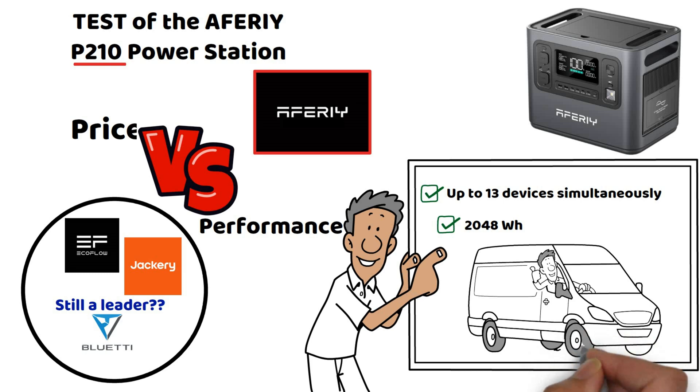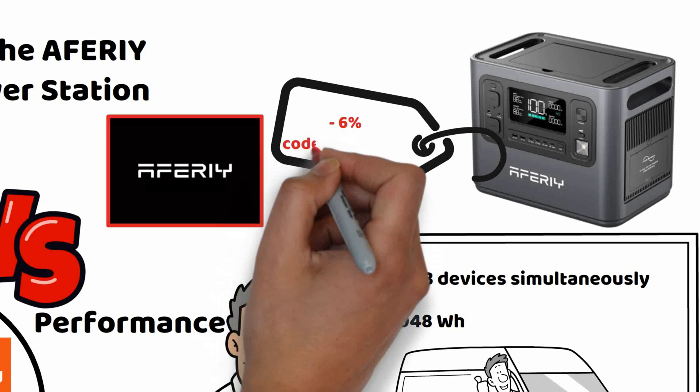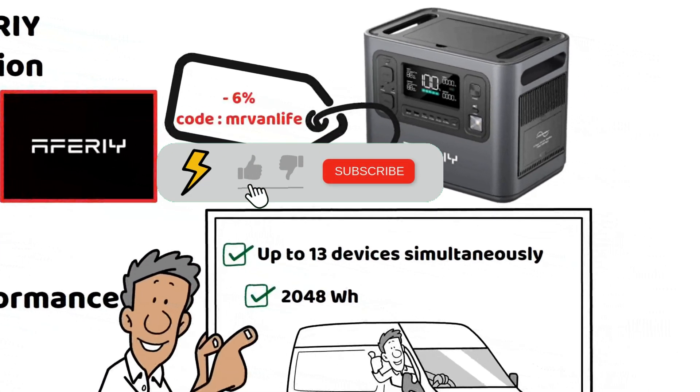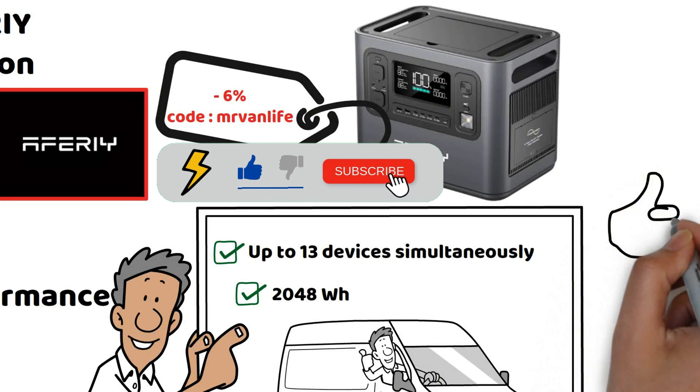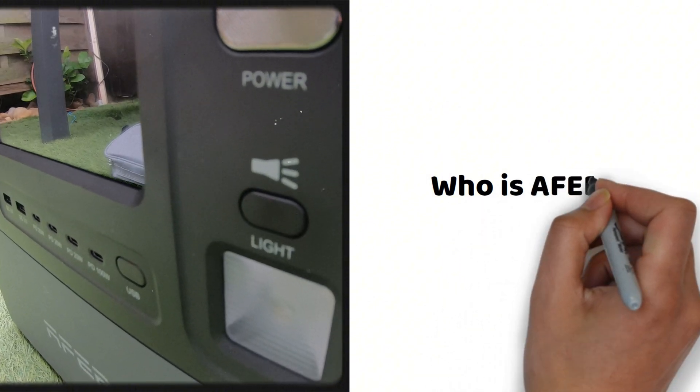Before diving into the features of the Aferiy P210, you'll find in the description a 6% discount code to use directly on the brand's website. The code is Mr. Van Life. Simple, efficient, and easy to remember. And don't hesitate to subscribe to the channel and give us a little like for encouragement. It always makes us really happy.